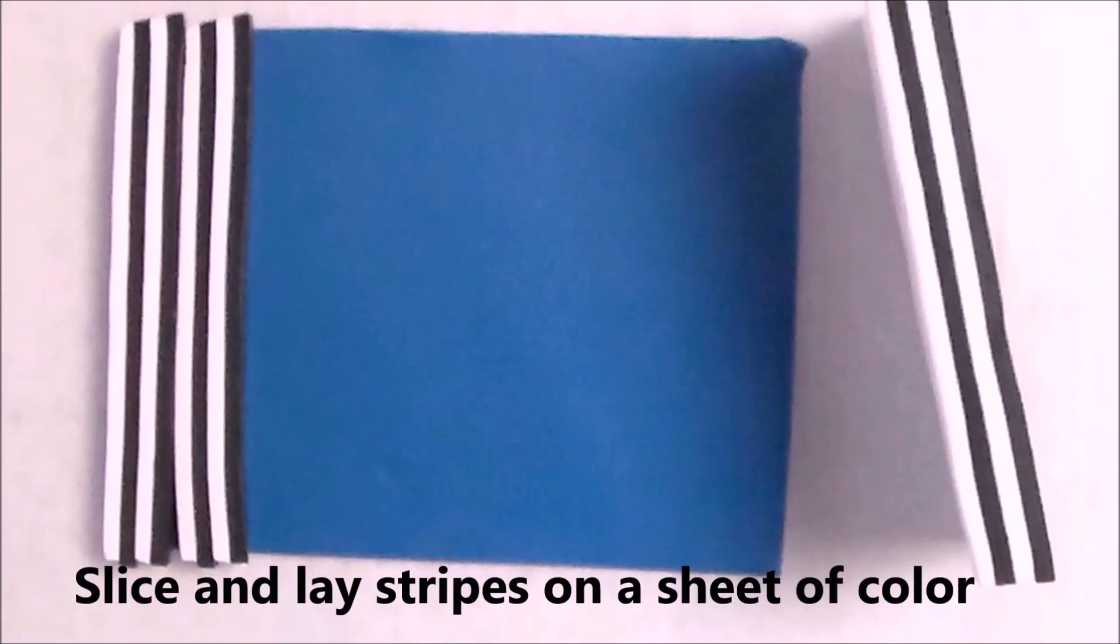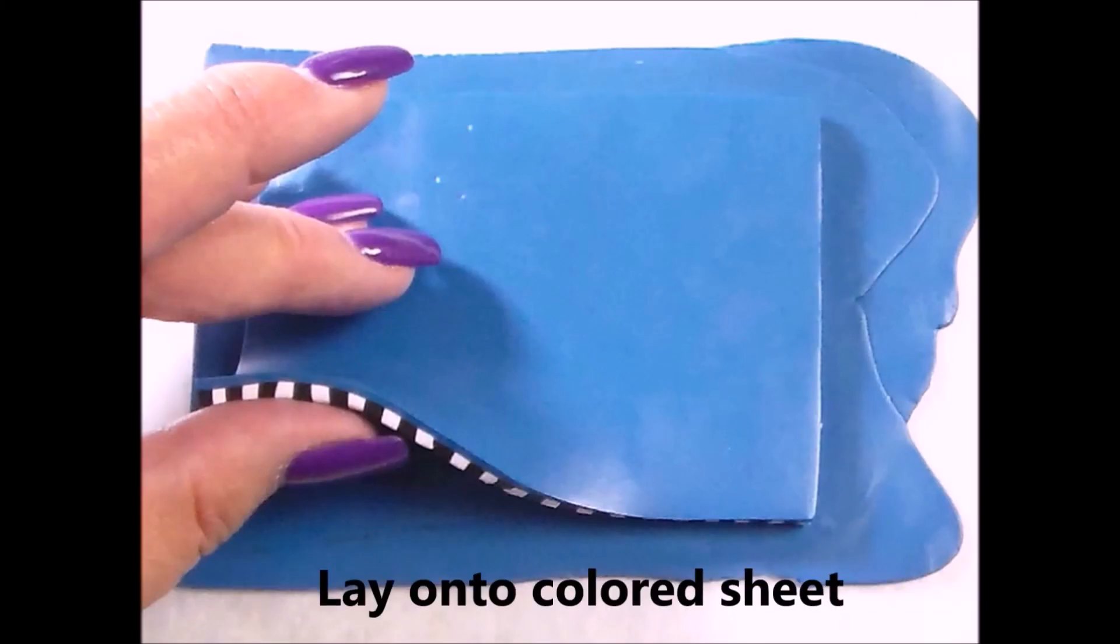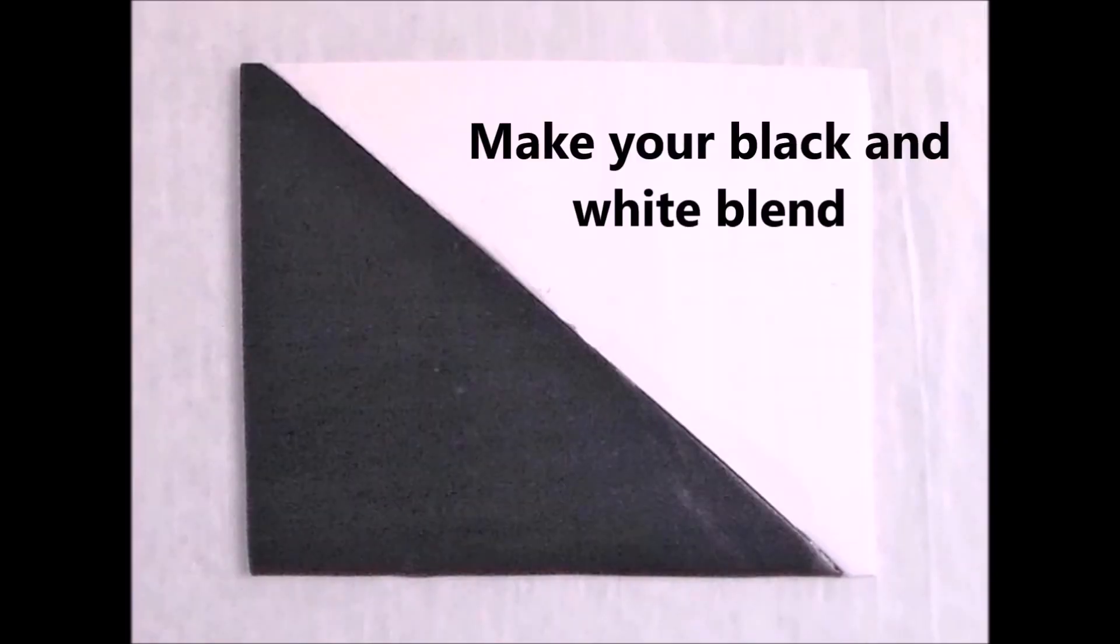So I've got this stack black and white. Cut some slices and lay them on a sheet of color. That's about a number five I think. I don't like the sheets to be too thick of the color. I just like them there for lines accent.